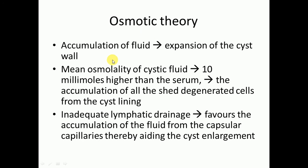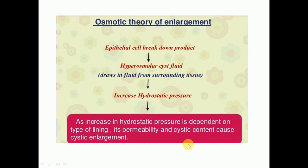Now we will discuss about the osmotic theory. The accumulation of fluid leads to the expansion of the cyst wall. The mean osmolarity of cystic fluid is 10 millimoles higher than the serum, leading to accumulation of shed degenerated cells from the cystic lining. Along with this increased osmolarity, there is inadequate lymphatic drainage, which favors accumulation of fluid from the capsular capillaries, thereby aiding cyst enlargement.